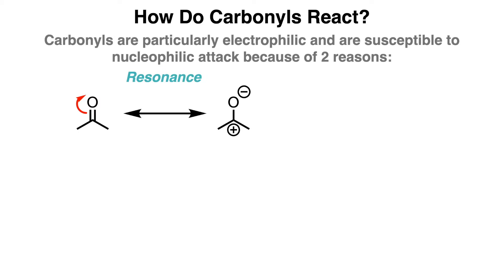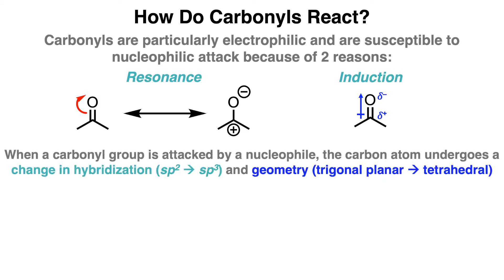This means that the carbon atom of a carbonyl is much more electrophilic while the oxygen atom acts more like a nucleophile. In terms of induction, the oxygen atom is more electronegative than carbon, so electron density is pulled towards the oxygen atom. Since the carbon atom is deficient in electron density, it's more susceptible to being attacked by a nucleophile.